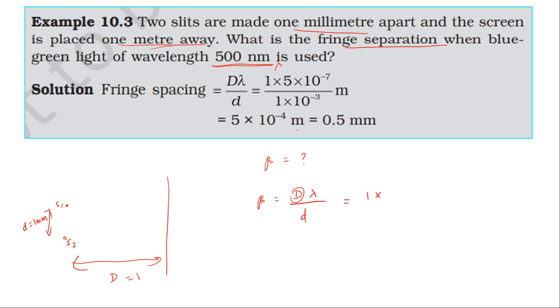Wavelength is 500 nanometer, which is 500 times 10^-9. Nanometer is 10^-9. Small d is one millimeter, which is 10^-3 meter. So 500 times 10^-9